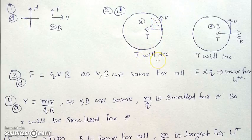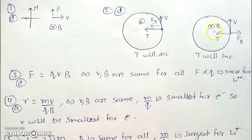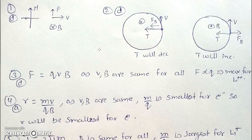So tension will decrease because there are two centripetal forces. And if there is a magnetic field out of the plane of paper which is switched on, the magnetic force will be in the outward direction and hence the tension will increase. So both cases are possible as it is not specified whether the magnetic field switched on is into the plane of paper or out of the plane of paper.